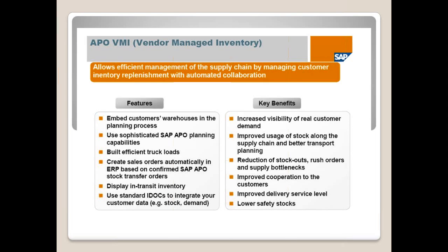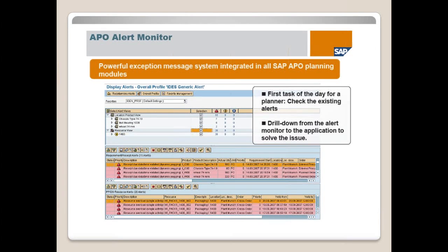The VMI (Vendor Managed Inventory) scenario is also supported by APO. It integrates with customer systems and you can directly create orders into the customer system. With integration to vendor systems, their inventory can be accessed and based on demand, purchase orders can be created directly to vendor systems.